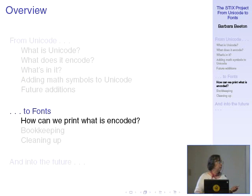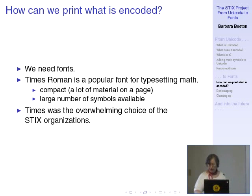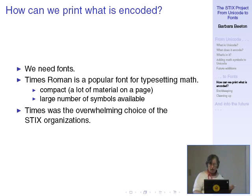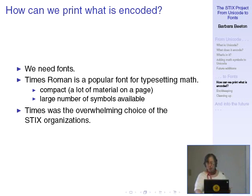Now we've got our coded characters — how can we put them on paper? We need fonts. The six major participants in the STIX project were the American Physical Society, American Institute of Physics, American Chemical Society, IEEE, the American Mathematical Society, and Elsevier. Together they decided that Times Roman was the font they would all accept, and essentially Times was the basic font around which the STIX fonts were created.